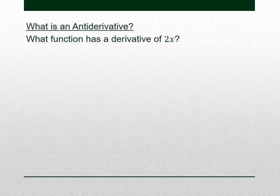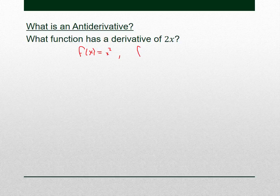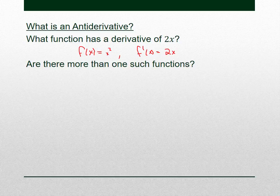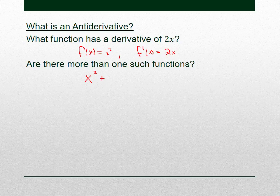The most common answer is x squared. If f(x) = x², then f′ = 2x. But are there more? What about x² + 1? Its derivative is also 2x. What about x² + 2, or x² + 30? They also have derivative 2x. So x squared plus any constant has derivative 2x.